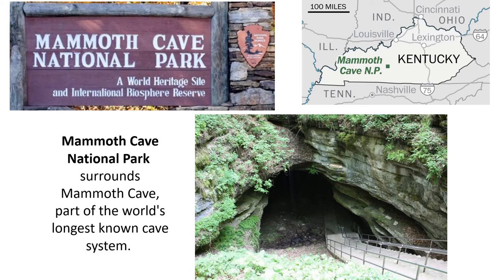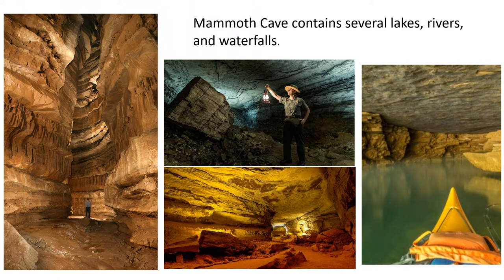We are now heading southwest to Mammoth Cave National Park in Kentucky. Mammoth Cave National Park surrounds Mammoth Cave, which is part of the world's longest known cave system, over 400 miles long. As you hike through Mammoth Cave, you come across many natural wonders — it contains several lakes, rivers, and waterfalls. I also had the opportunity once to go through Mammoth Cave. Not all of it, but part of it. But it's beautiful.